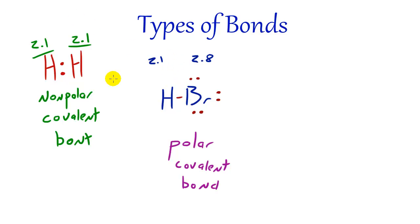Because bromine has a stronger electronegativity of 2.8 and hydrogen only has electronegativity of 2.1, the electrons would be more strongly attracted to the bromine.